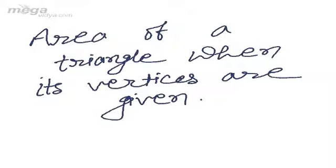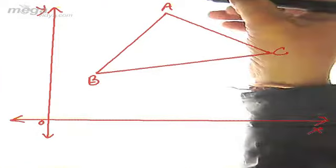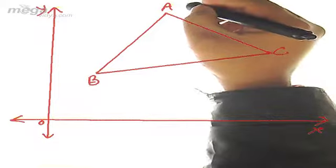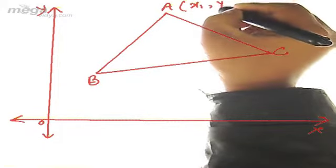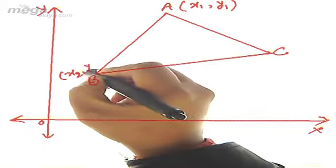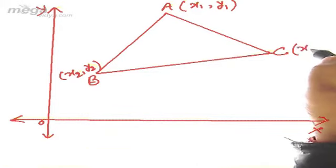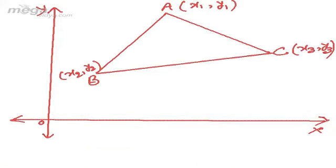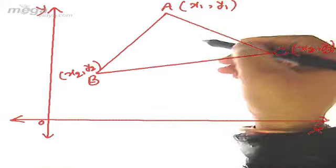Area of a triangle when its vertices are given. You did this formula in class 10th. I'm just proving it here. Suppose we have a triangle ABC whose vertices are x1 comma y1, x2 comma y2, and x3 comma y3, and we have to find the area of this triangle.